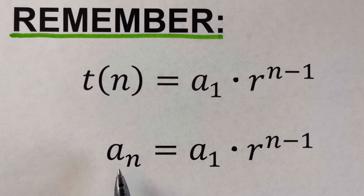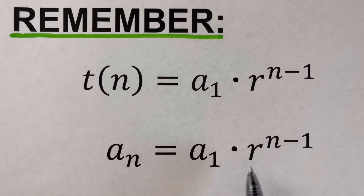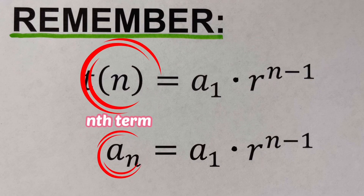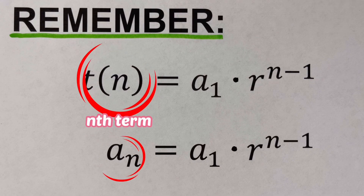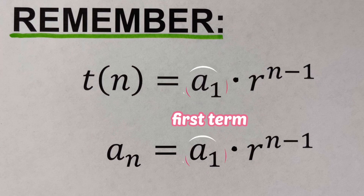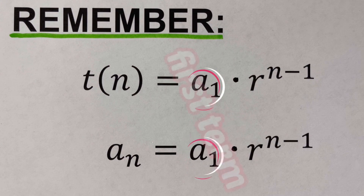They're the same thing — just different variable notation. The formula is a sub 1 times r raised to the power n minus 1. Here, t(n) and a sub n represent the nth term of the sequence, while a sub 1 is the first term of the sequence.